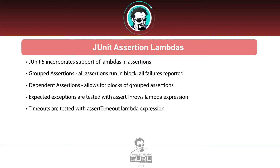Dependent assertions allow for blocks of grouped assertions, so you can do very flexible things — like only continuing if certain conditions pass. JUnit 5 also uses lambda expressions for exceptions and timeouts. In JUnit 4, these were controlled with annotations. JUnit 5 has moved them to lambdas, and it's a much cleaner programming model, so we'll be seeing examples of that coming up.